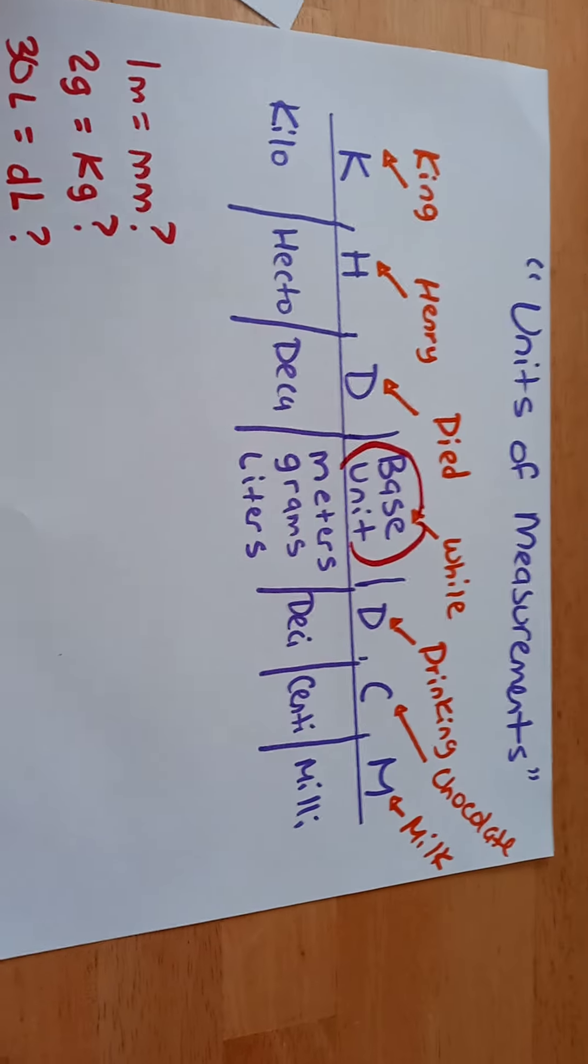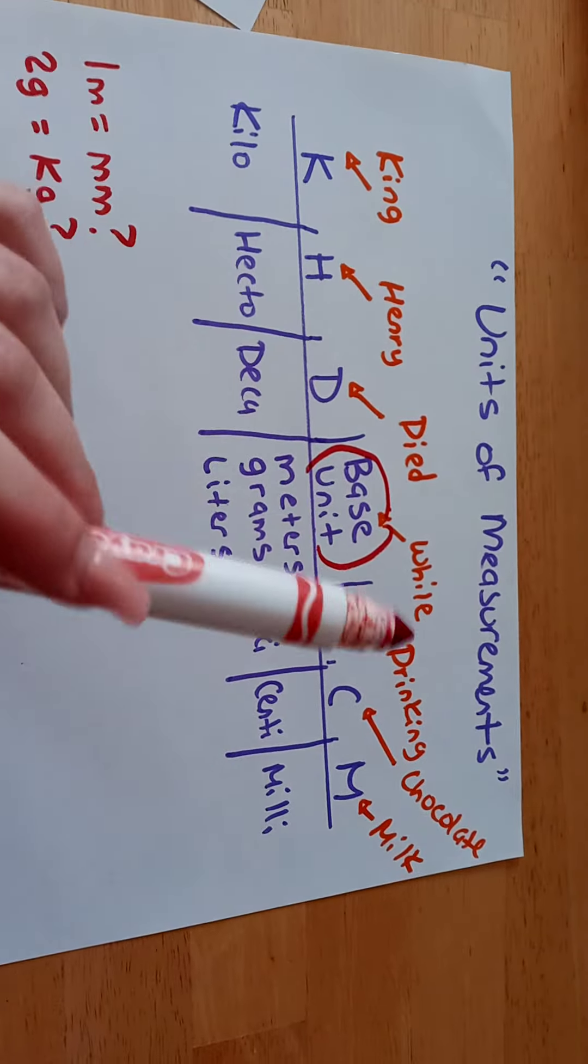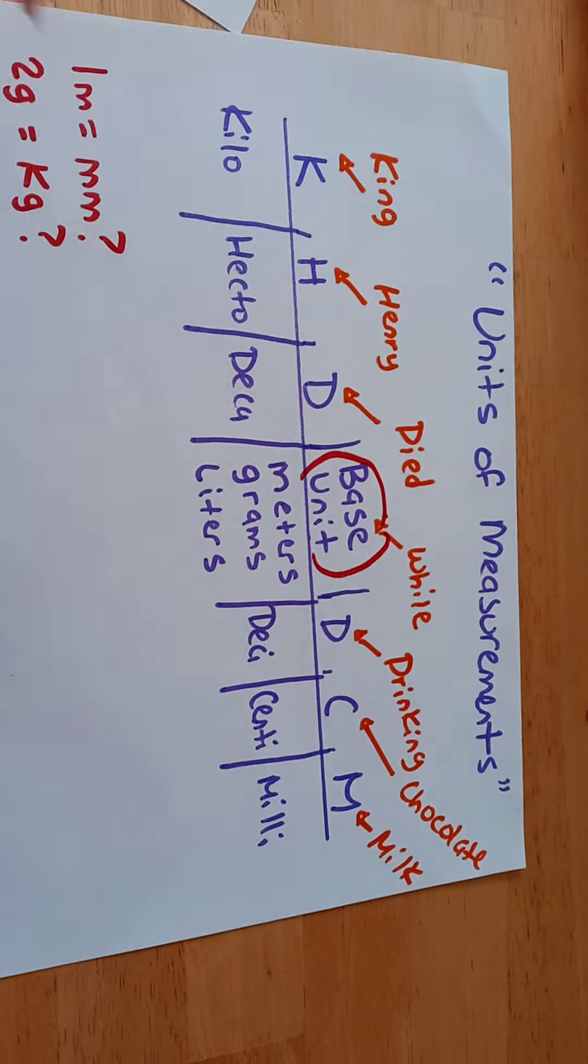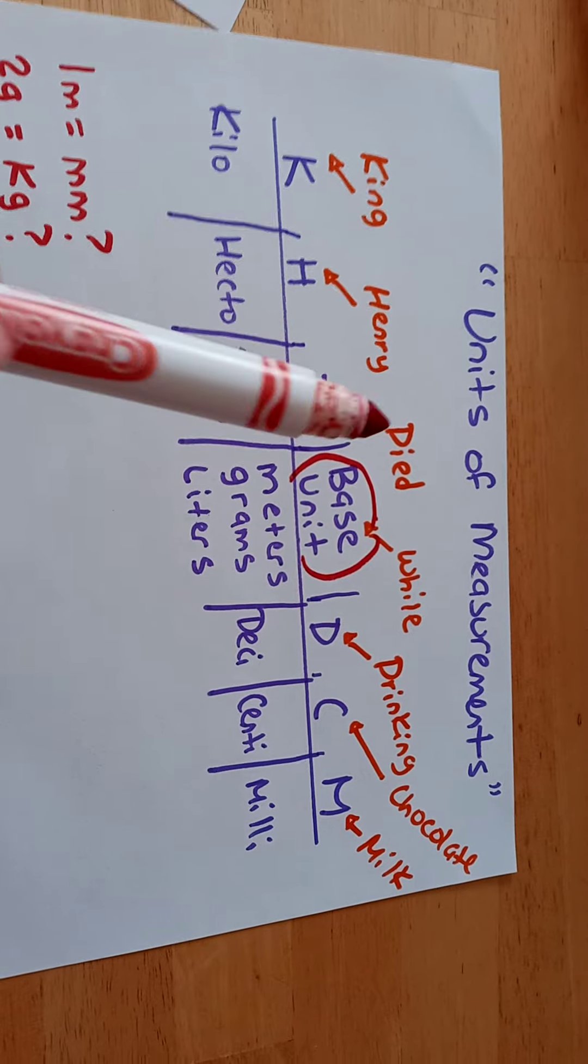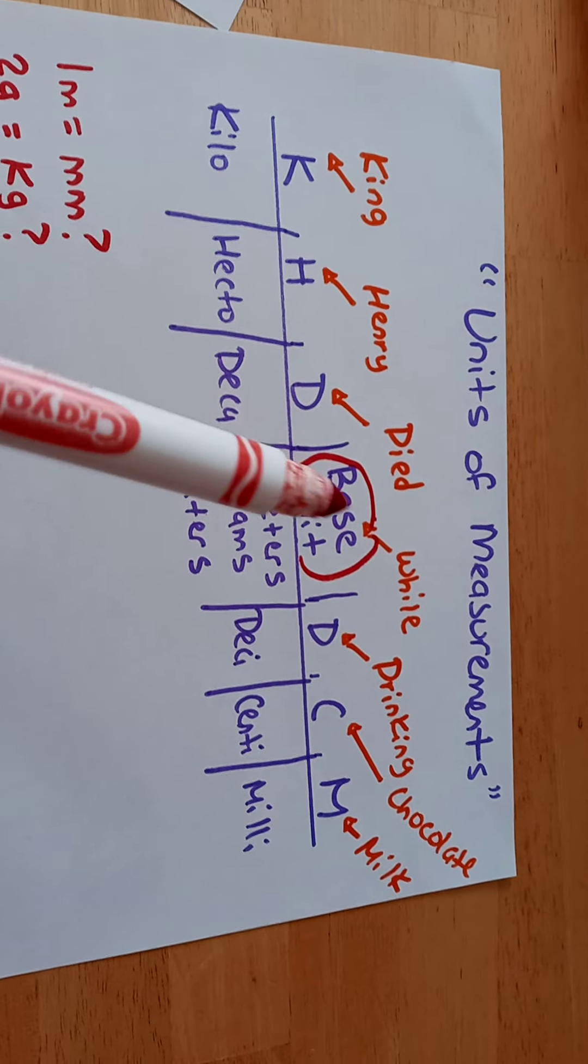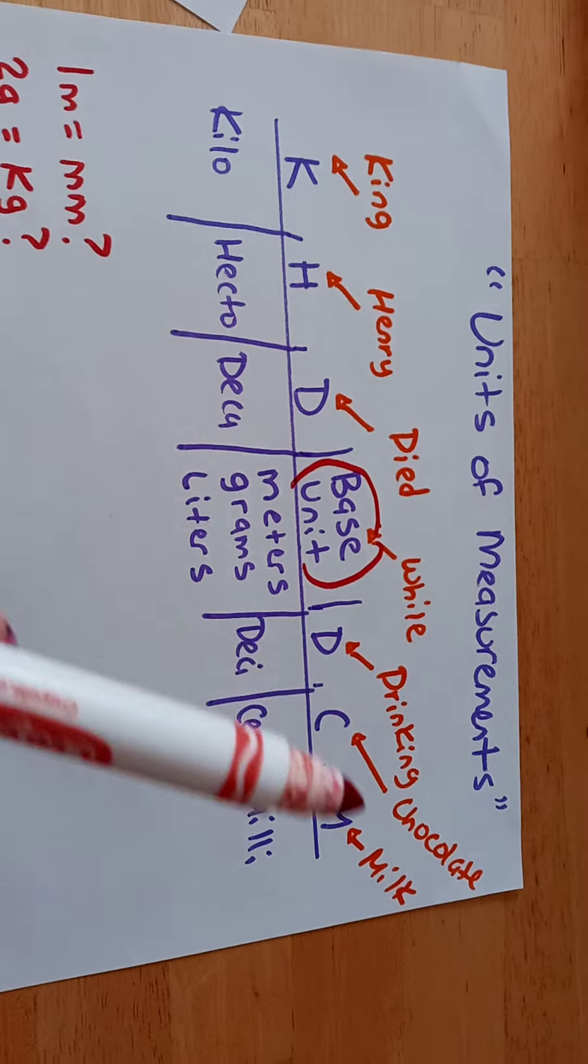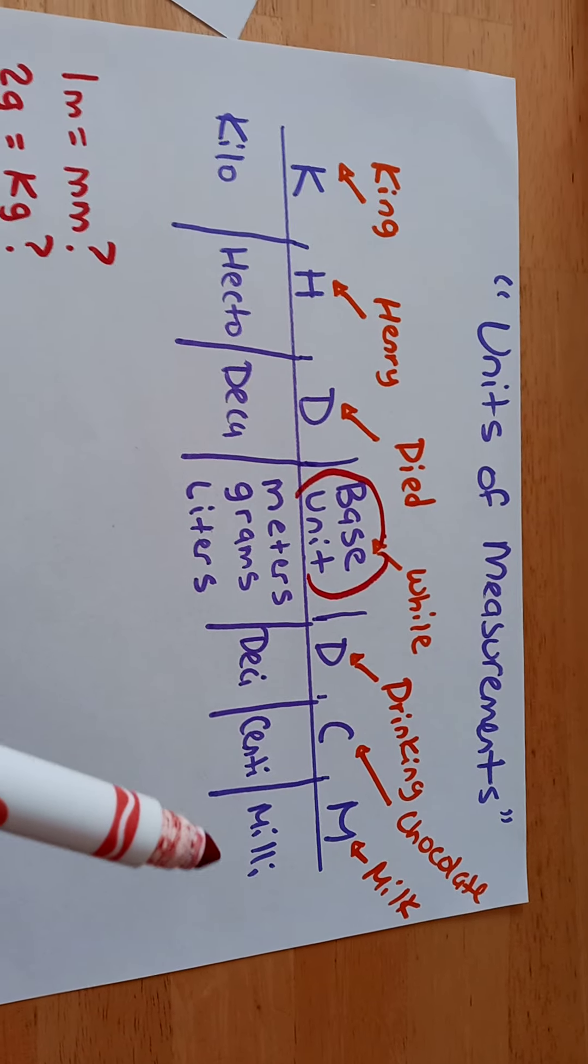Please remember this phrase: King Henry died while drinking chocolate milk. King is for kilo, Henry is for hecto, died is for deca, while is the base unit, drinking is deci, chocolate is centi, and milk is milli.